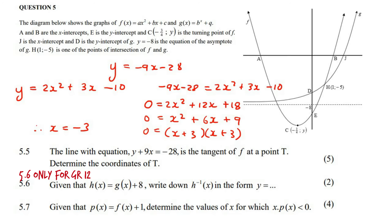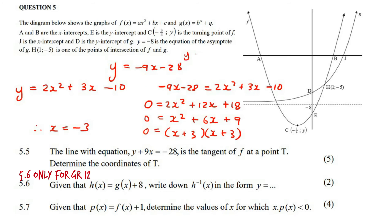Now we just need the y value. Plugging x equals minus 3 into the tangent equation: minus 9 times minus 3, minus 28 equals 27 minus 28, which is minus 1. So the y value is minus 1. The coordinates of T are x equals minus 3 and y equals minus 1.